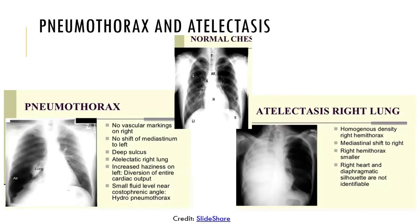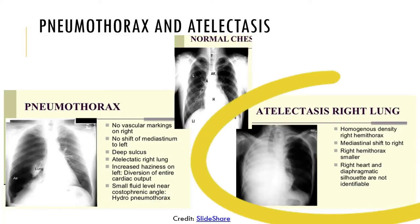Now let's look at pneumothorax and atelectasis. Both are shown as x-rays with descriptors explaining the difference. Pneumothorax is air within the interpleural space, resulting in increased pressure on the surface of the lungs, which can cause the lung to collapse. Atelectasis refers to the actual collapsed lung itself.